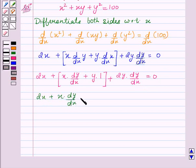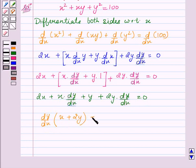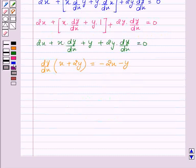Now we'll take dy/dx common, and this gives us (dy/dx)(x + 2y) = -2x - y. Therefore dy/dx = -(2x + y)/(x + 2y).